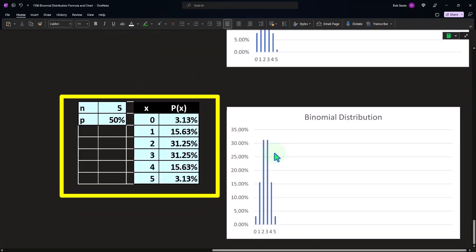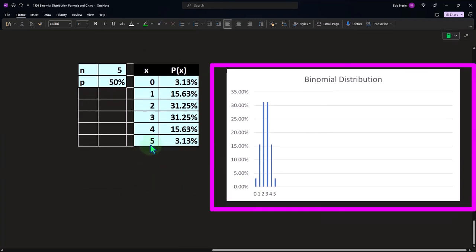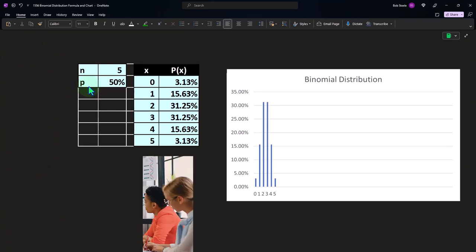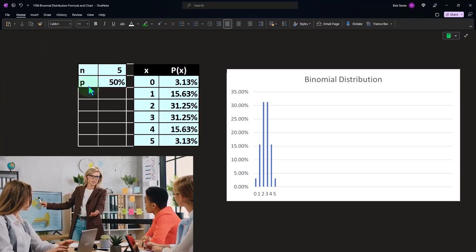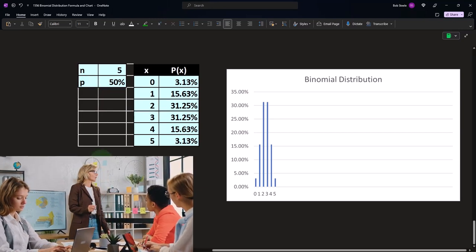So if I move this up to 50%, now you've got something that looks somewhat more bell-shaped. So as we increase N or P, as we increase them, then we tend to get something that starts to look more bell-shaped. That's the general trend that you will see. In future presentations, we'll get more into detail with some actual kind of more scenario-based problems.